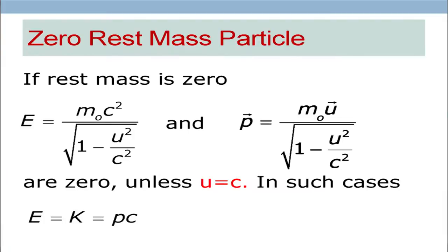It means there is a possibility that a particle with zero rest mass could possess energy as well as momentum. But in that case, relativity will allow that only if the denominator also becomes zero, and that will happen only when u becomes equal to c. It means that particular particle must travel with the speed of light. Relativity gives you a possibility of a particle with zero rest mass which could possess energy and momentum, but must travel with the speed of light.